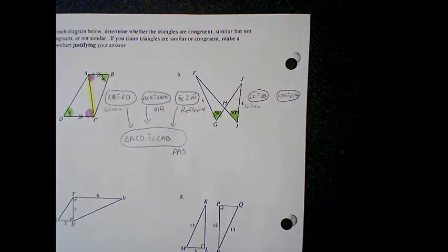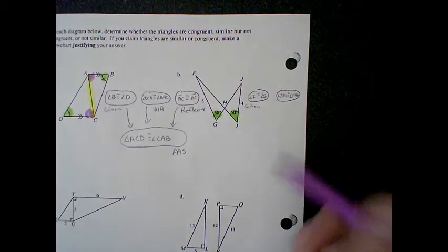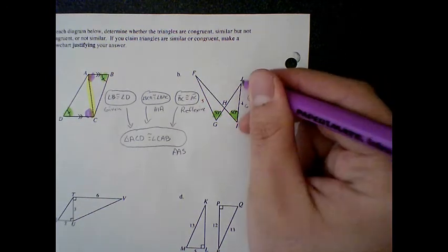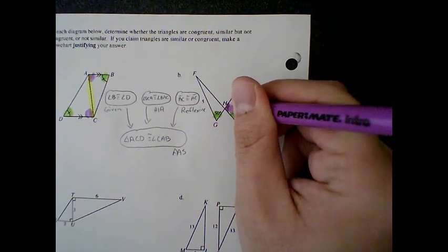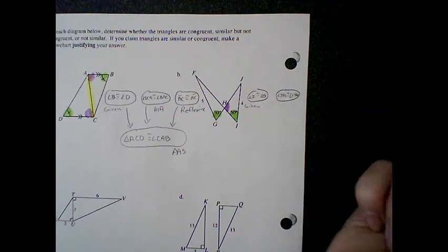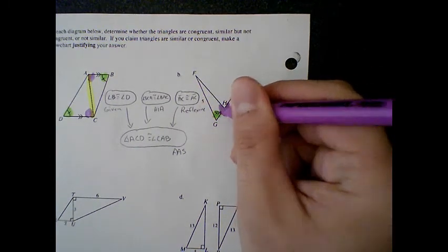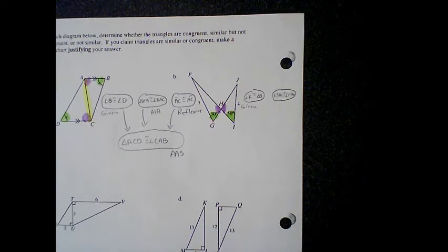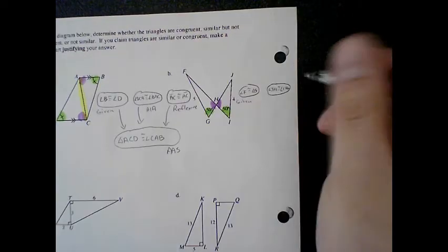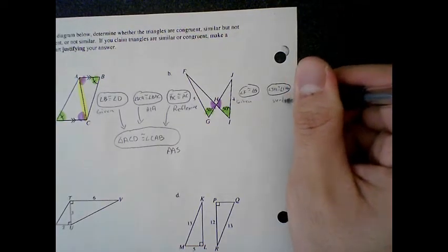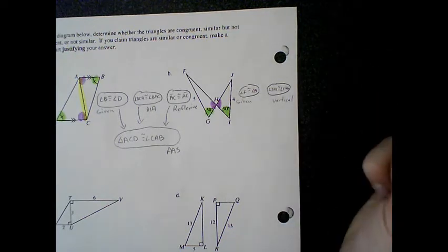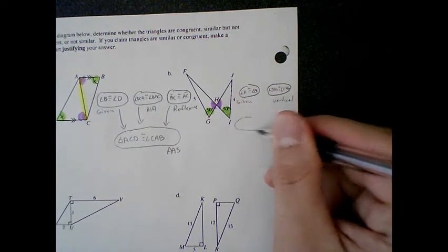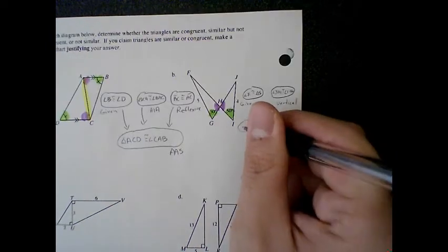And what do you think the other angle is that's going to be congruent? So it says angle JHI, this angle right there is congruent to FHG, which is that angle right there. And how do I know that these two are congruent? They are vertical angles. So then I can write my conclusion.